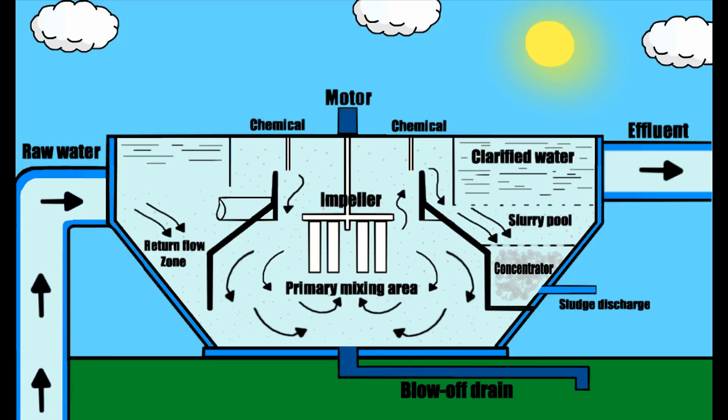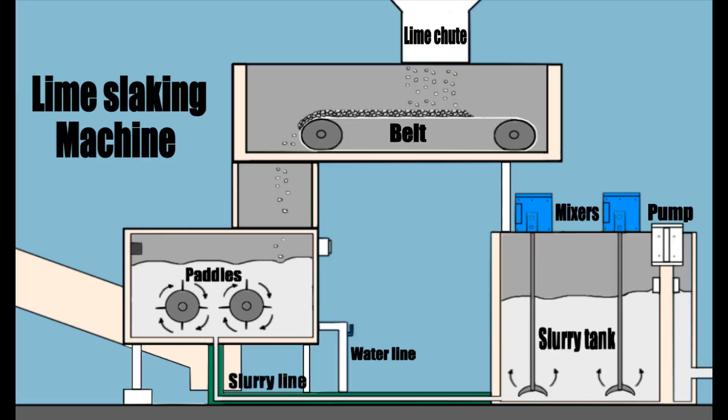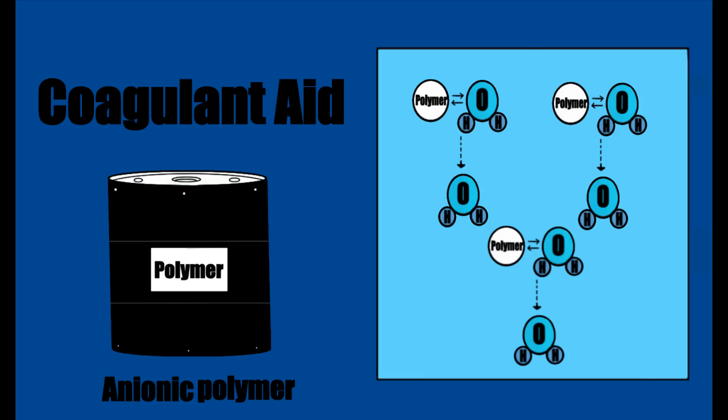This is a lime slurry created in the slaking process of one of our two lime slaking machines. This lime slurry, along with the polymer that is added to bond the lime particles together and cause them to settle out, effectively reduces the hardness of the raw water.